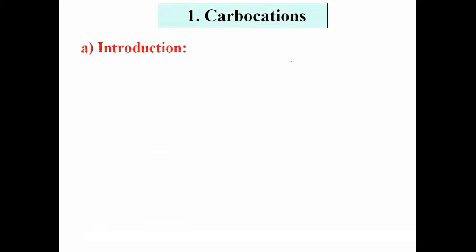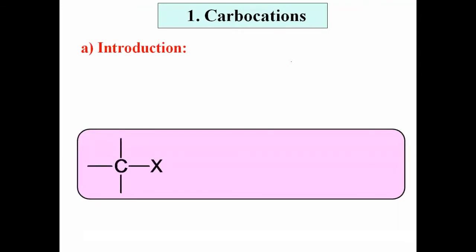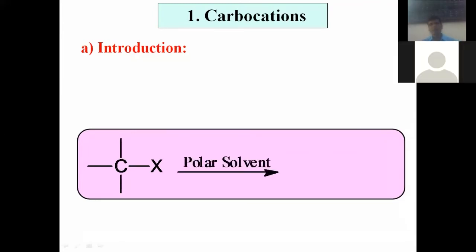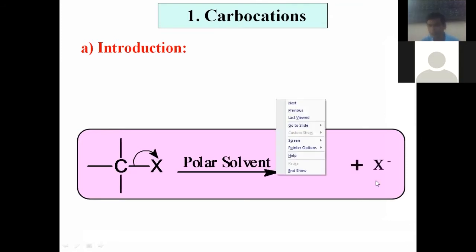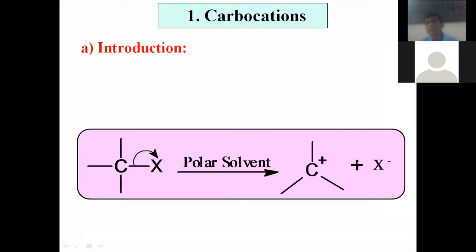Let us start with the introduction. What is meant by carbocation? Suppose this is an organic compound in which there is a covalent bond between carbon and X. Suppose this bond undergoes heterolytic breaking. During the bond breaking, that electron pair completely goes towards X, which is more electronegative. Then this bonded electron pair completely goes towards X and it acquires negative charge, while carbon acquires positive charge. Thus, there is a positively charged carbon species, and this intermediate is called carbocation.